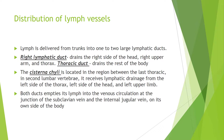Lymph is delivered from trunks into one to two large lymphatic ducts. The right lymphatic duct drains the right side of the head, right upper arm, and thorax. The thoracic duct drains the rest of the body. The cisterna chyli is located in the region between the last thoracic and the second lumbar vertebrae, and it receives lymphatic drainage from the left side of the thorax, left side of the head, and left upper limb. Both ducts empty lymph into the venous circulation at the junction of the subclavian vein and the internal jugular vein on its own side of the body.